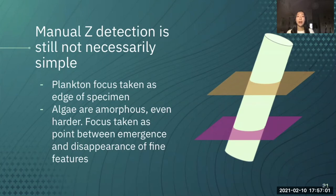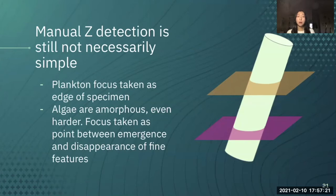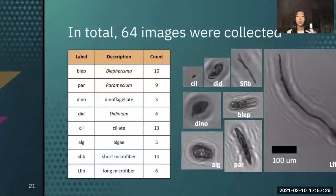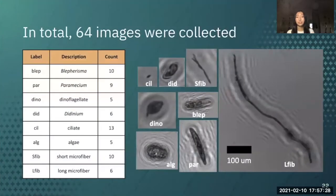It's not always easy to determine which plane is best. The other thing is that algae, which was one of our subclasses of plankton, are amorphous — meaning it's even harder than the other plankton types. For humans, it was really difficult to tell when the algae was in focus because they're this weird blurry shape. We took the focus as the point between emergence and disappearance of fine features, but they were definitely not always easy to determine. In total, we collected 64 images of eight different classes to see if the focus metric performance had anything to do with the shape and size of the plankton.